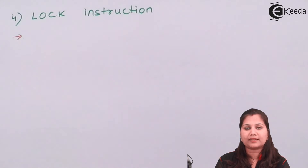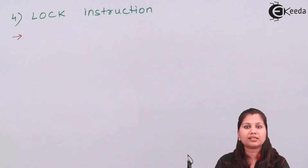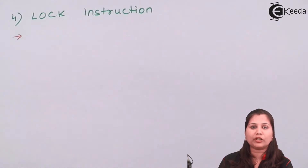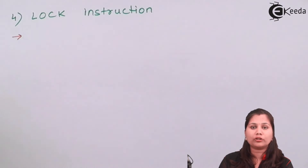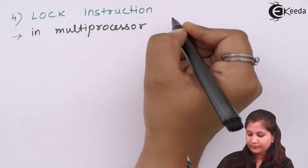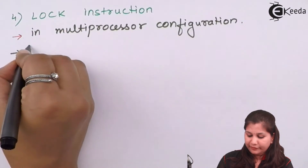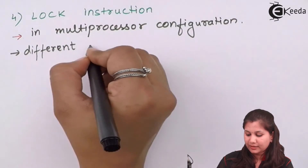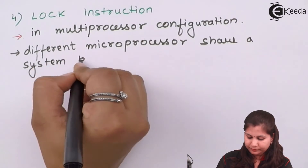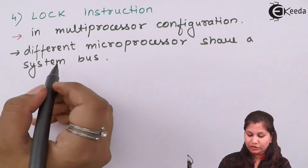The next instruction is the LOCK instruction. When the 8086 microprocessor is working in a multiprocessor environment, there are various types of processors sharing the same system bus for communication. The LOCK instruction is used to lock the system bus for a particular instruction. Whenever LOCK is written in front of any instruction, the system bus is locked for that instruction by a particular processor only. This instruction is used in a multiprocessor environment where different microprocessors are sharing a system bus, to lock it for a particular instruction.